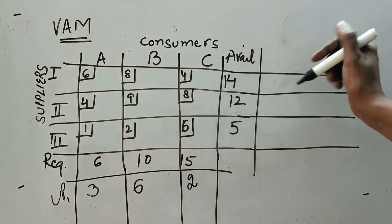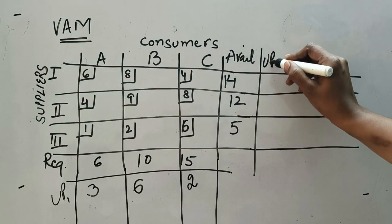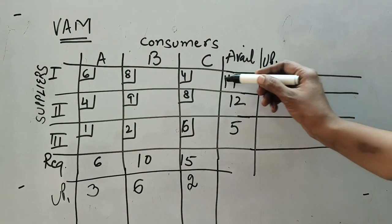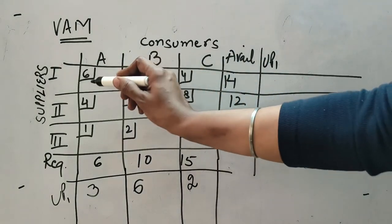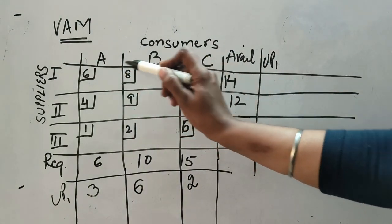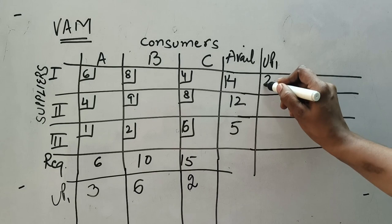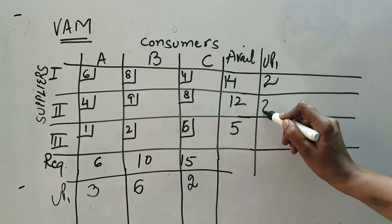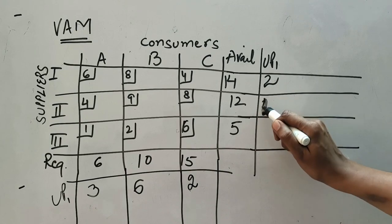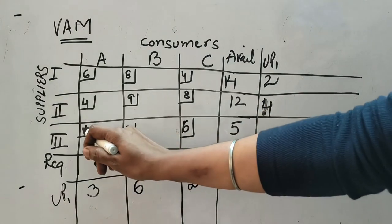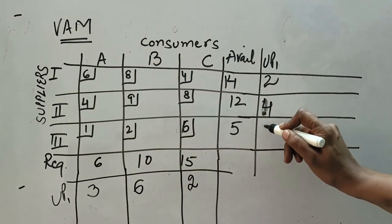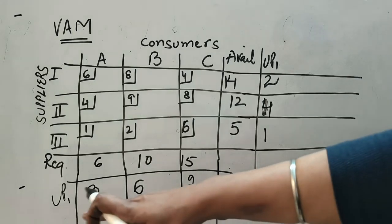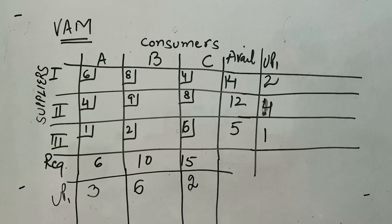Now I will calculate unit penalties column-wise. For the first column, the three cost cells give minimum 4 and next minimum 6, so the difference is 2. For the second column, minimum is 4 and next minimum is 8, so the difference is 4. For the third column, minimum is 1 and next minimum is 2, so the difference is 1. So column-wise unit penalties UP1 are 2, 4, 1.